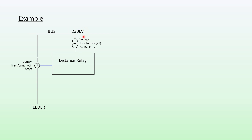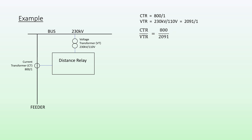Let's do an example. Here we have a distance relay connected to a 23 kV bus by means of a VT rated 23 kV to 210 volts, and the relay is also connected to the feeder by means of an 800 to 1 amp CT. This gives us a VT ratio of 2,091 to 1, so our CT ratio over VT ratio is 800 divided by 2,091, which equals 0.383.